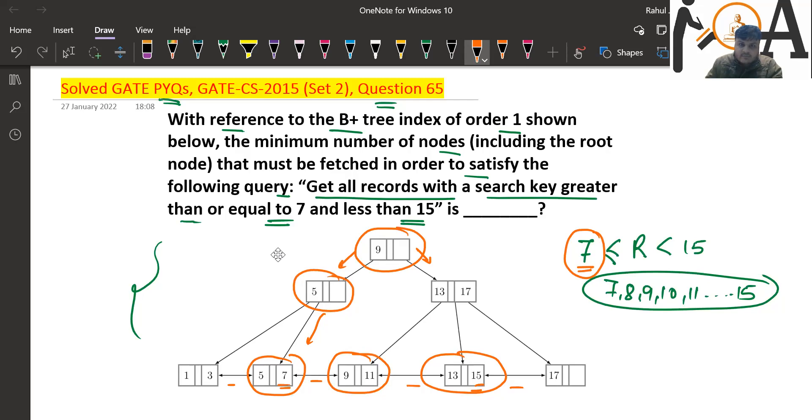So the number of nodes that are fetched is 1, 2, 3, 4, 5. But let's make it some more interesting.